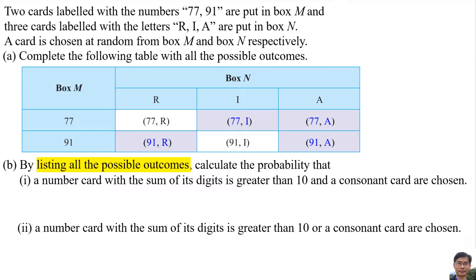When listing all the possible outcomes, calculate the probability that a number card with the sum of digits is greater than 10. Sum of digits means the sum of these 2 digits. 7 plus 7 equals 14 and the sum of these 2 digits, 9 plus 1 equals 10.